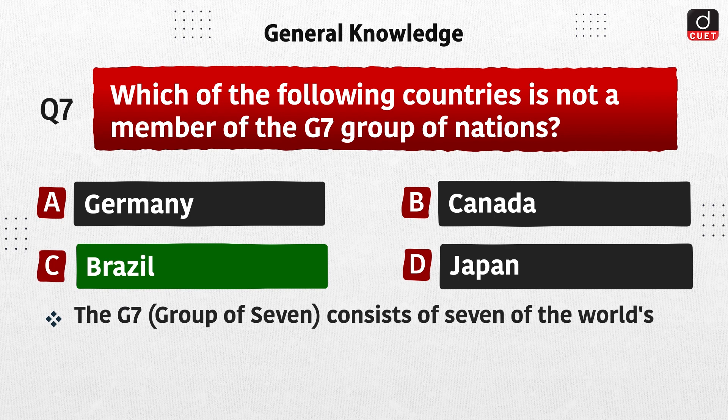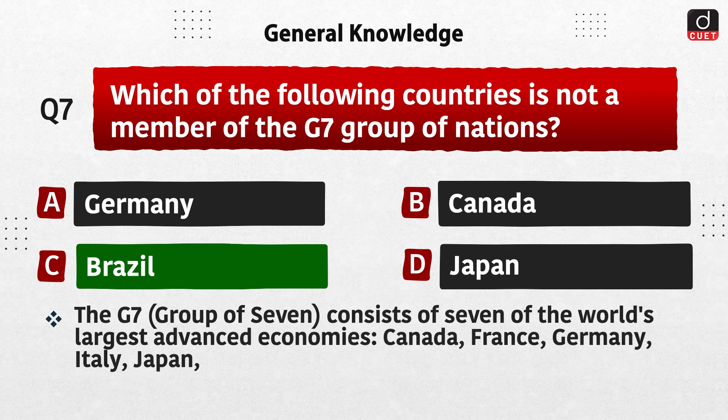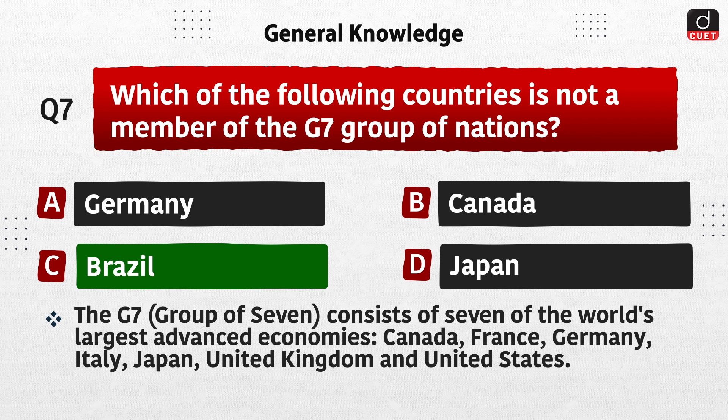The G7, that is Group of 7, consists of 7 of the world's largest advanced economies: Canada, France, Germany, Italy, Japan, United Kingdom, and United States.